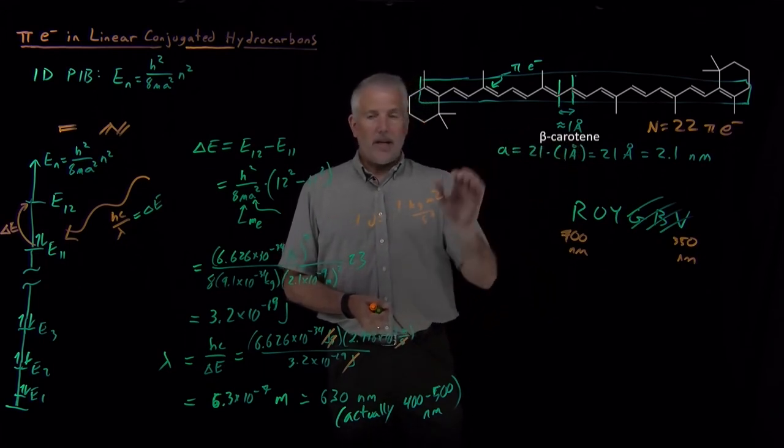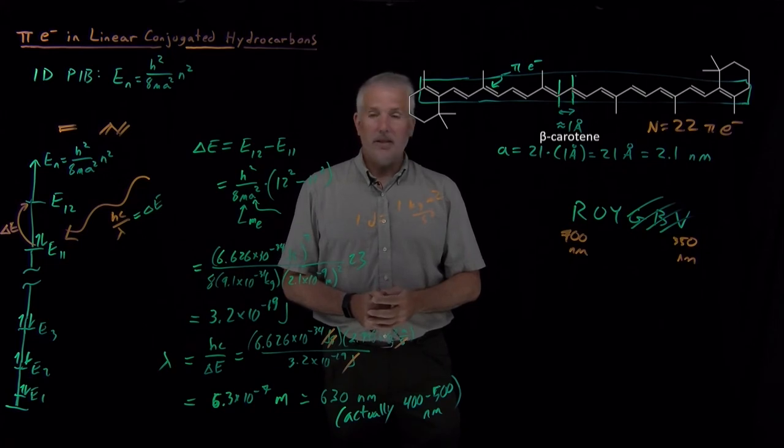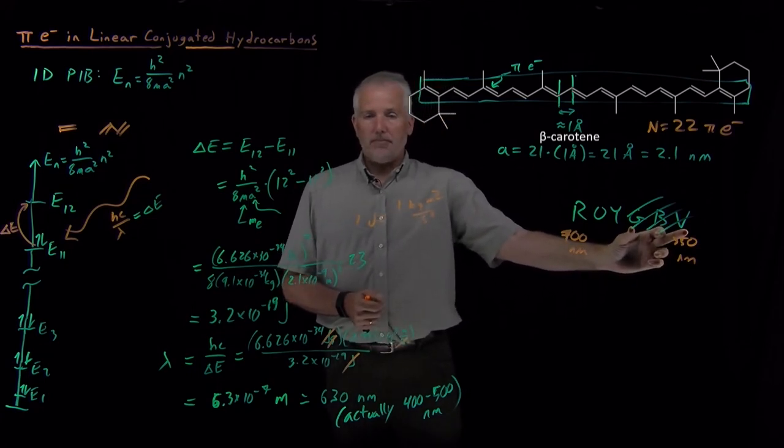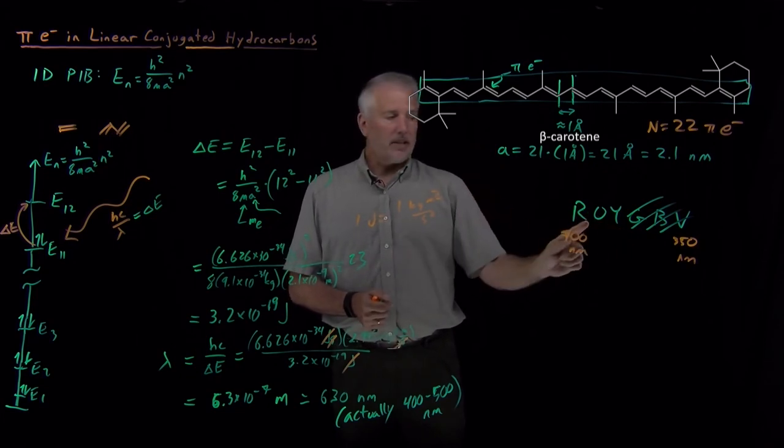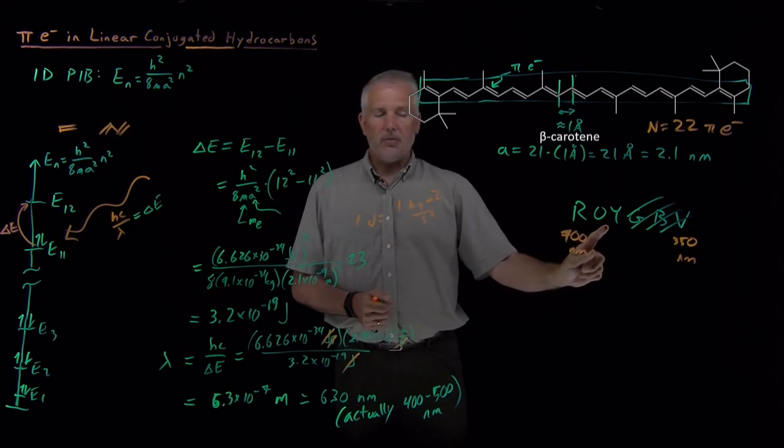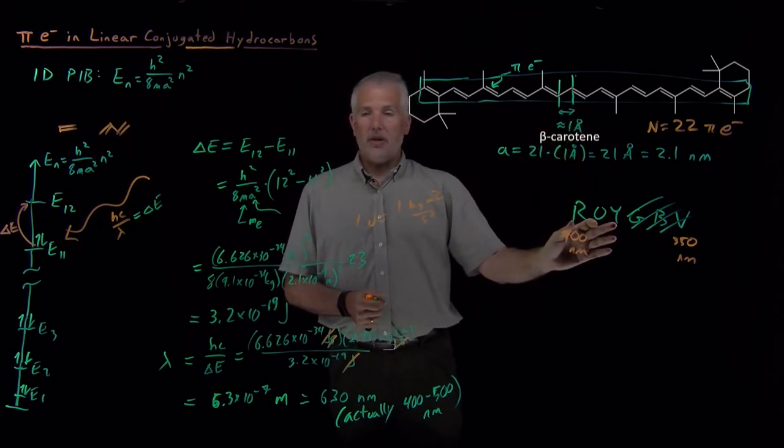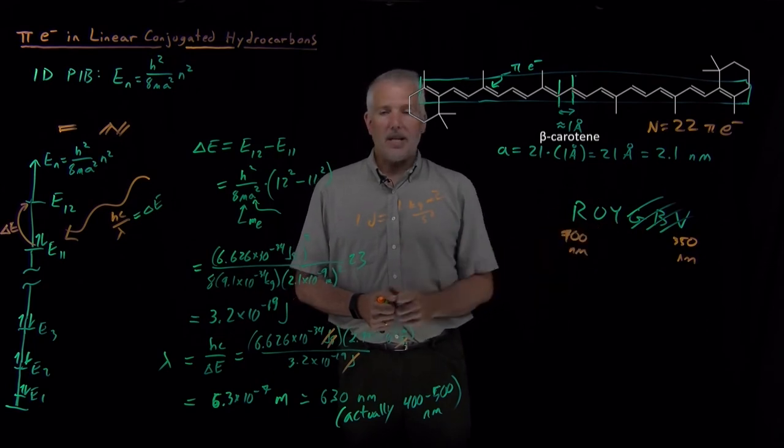So beta carotene or plants containing beta carotene, when white light gets shined on them, they absorb the light that's in the green-blue-violet part of the spectrum. They don't absorb the light that's in the red-orange-yellow part of the spectrum. So the part of the light that gets reflected back to our eyes is in this orange side of the spectrum. So that's the reason that the molecule appears reddish-orange or carrots appear orange is because those colors are not absorbed by the molecule, and those are the colors that remain to be detected by our eyes.